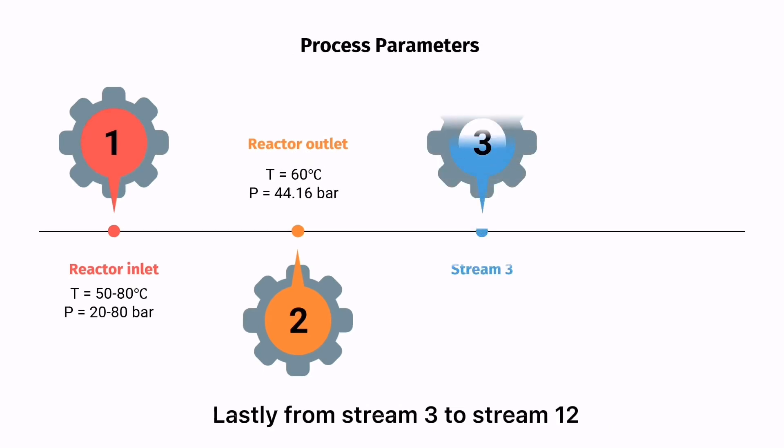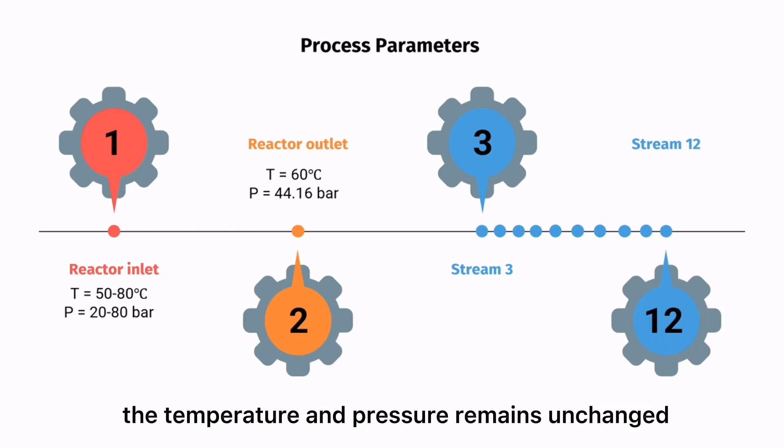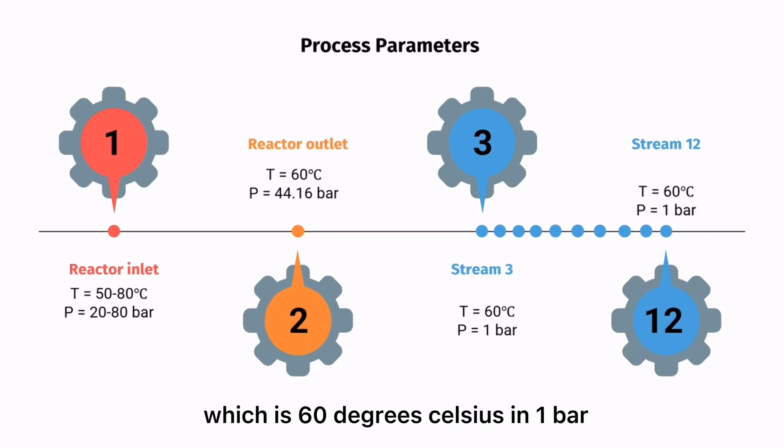Lastly, from stream 3 to stream 12, the temperature and pressure remain unchanged which is 60 degrees Celsius and 1 bar.